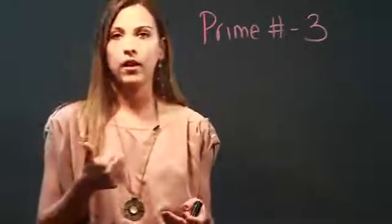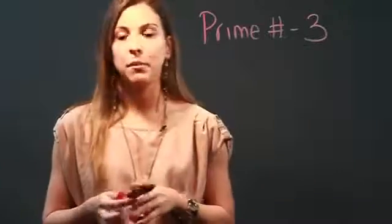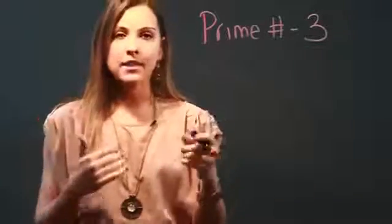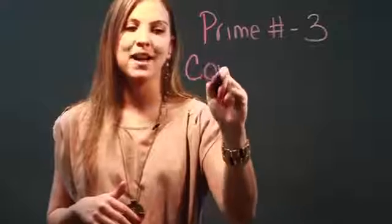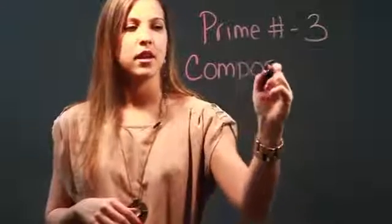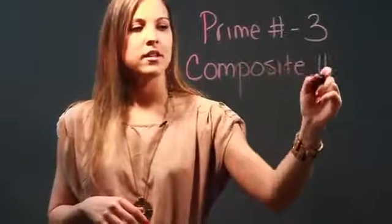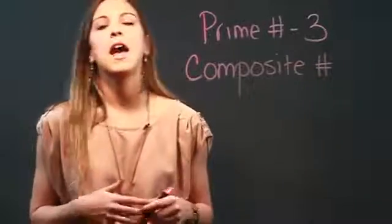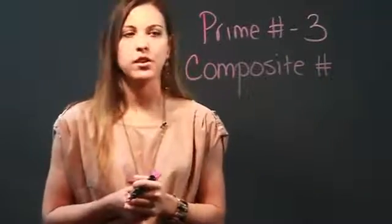And that's the definition of a prime number. Now the opposite of those numbers are called composite numbers. So a composite number is going to have more than just two factors.